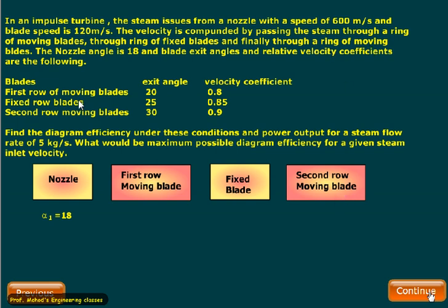The exit angles of the nozzle is the inlet angle to the moving blade, that is alpha 1 equals 18. The exit angle of moving blade is 30 degrees and the fixed row is 25 degrees. We have given the velocity coefficient equal to 0.8, 0.85, 0.9.